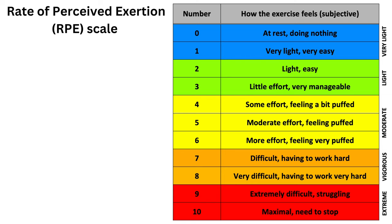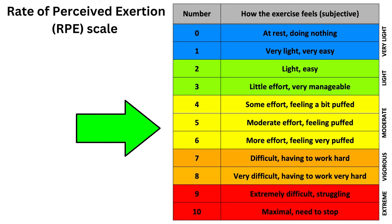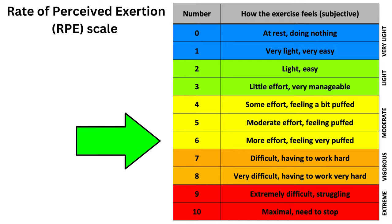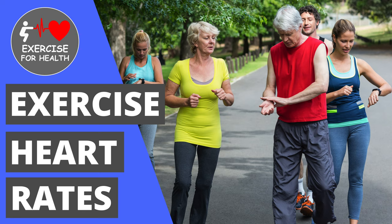When you are exercising, it's worth using the rate of perceived exertion scale of 0 to 10 to monitor your intensity. You should feel around a 4, 5 or 6 on this scale, where you feel puffed but can manage it for the duration you're exercising. You can also use your heart rate as a way of monitoring your exercise intensity, but this topic is a separate video which I did a couple of weeks ago — I'll leave a link in the description below if you want to check that out after this video.